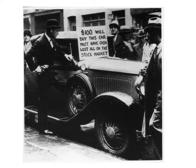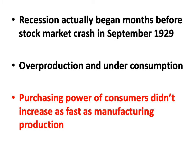There's a very graphic photo of a luxury automobile with a sign: 'A wealthy person sells this for $100, must have cash, lost all on the stock market.' Economists disagree somewhat as to exactly when the great economic recession began, but clearly it was months before the September 1929 stock market crash. It was caused by underconsumption by consumers and overproduction at the factories — consumers simply did not have access to sufficient credit or cash to purchase the many products.